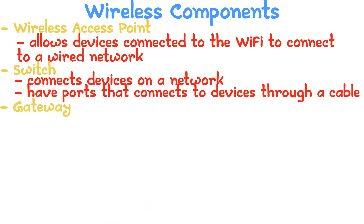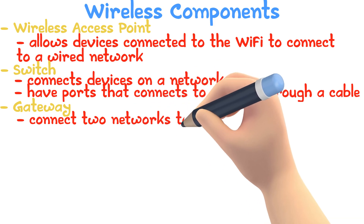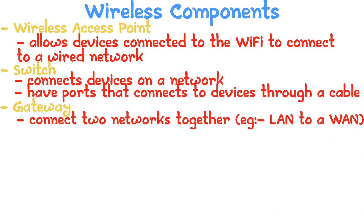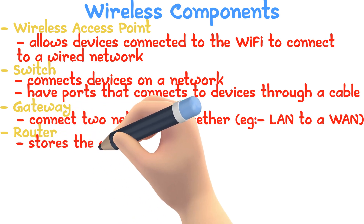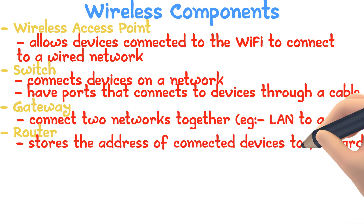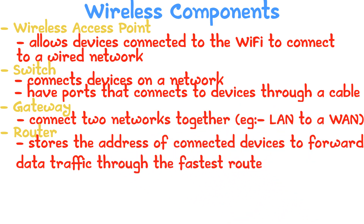Gateway: a gateway is used to connect two different networks, like a LAN to a WAN. Router: stores the address of a connected device to forward data traffic through the fastest route. Most routers have inbuilt switches, wireless access points, and even act as gateways.